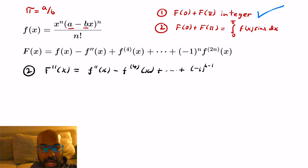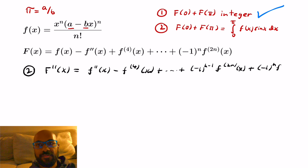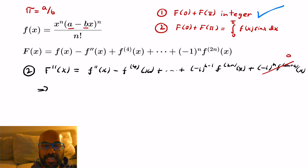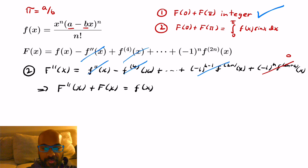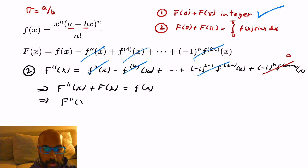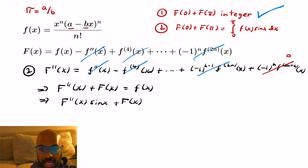Moving on to the second claim, we take the second derivative of capital F and notice it gives a similar expression to F itself, except with a change in signs. The (2n+2)-th derivative is zero since f is a polynomial of degree 2n. When we add capital F and capital F double prime, all the intermediate terms cancel due to sign changes, leaving just little f of x. Multiplying both sides by sine of x gives: capital F'' · sin(x) + F · sin(x) = f(x) · sin(x).